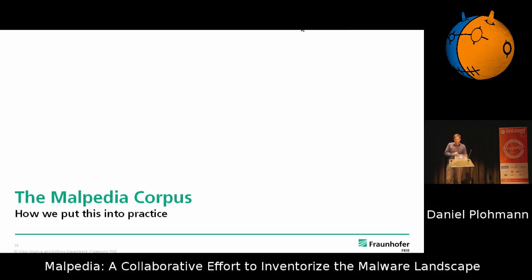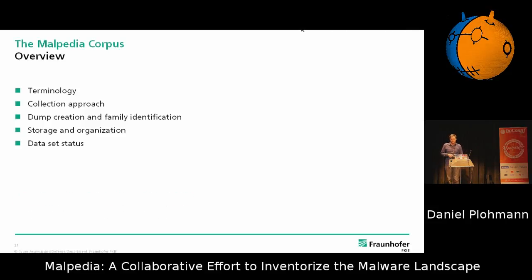So how are we going to put this into practice? I will first explain some of the terminology — what I mean if I call something a family or something is unpacked. Then I explain the collection approach in some more detail and how we produce those dumps. And finally, how the corpus is organized — so if you're later working with it, that's probably of interest to you — and also how much data we already have in there right now.